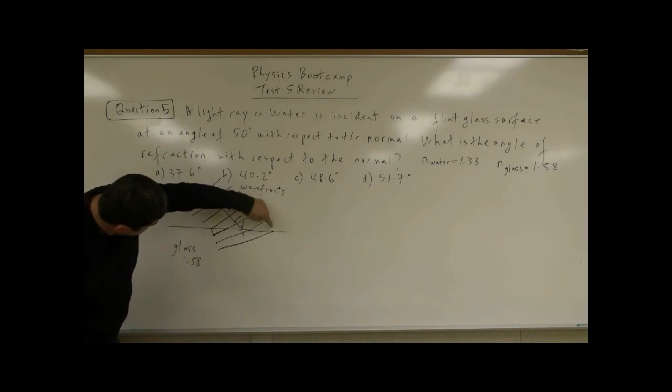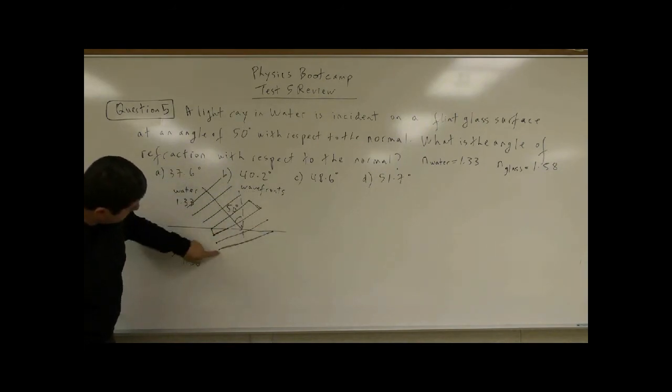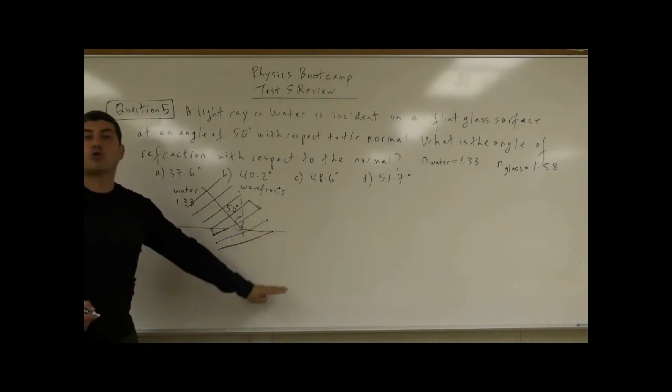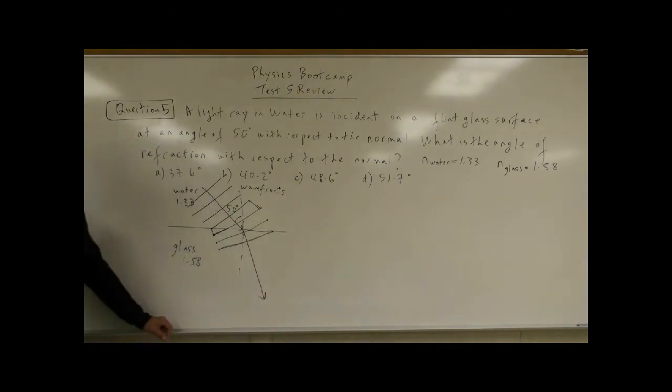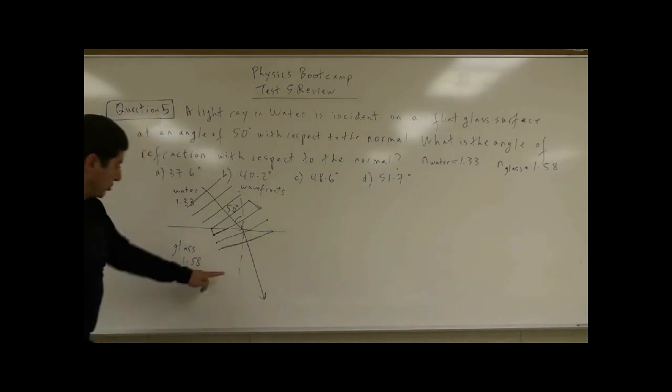And then by the time this part of the wave front enters here, this part has gone here, the whole wave has bent. So what happens to the beam of light? It bends inward. We're calling that bending inward. So the light bends towards the normal line. This is the normal line.